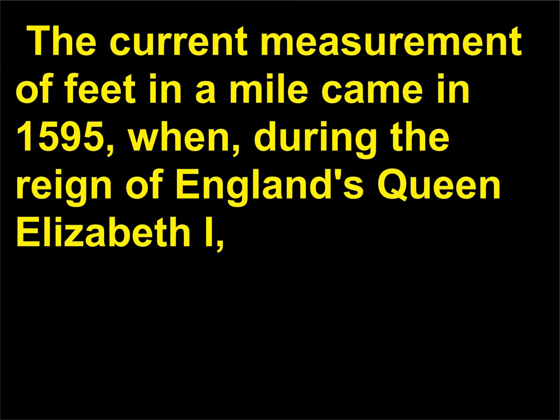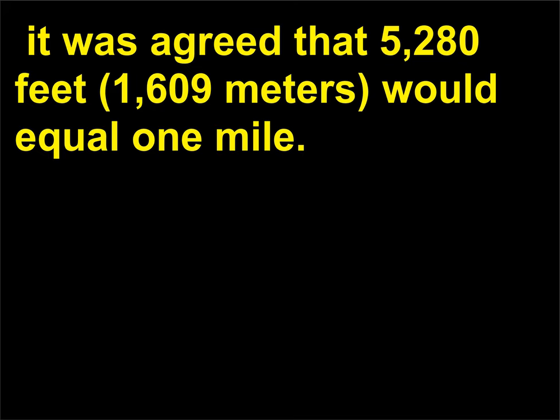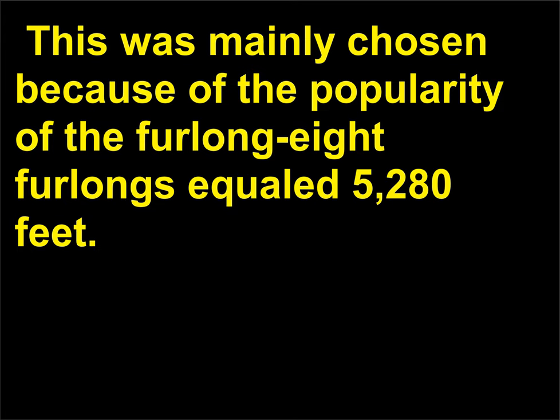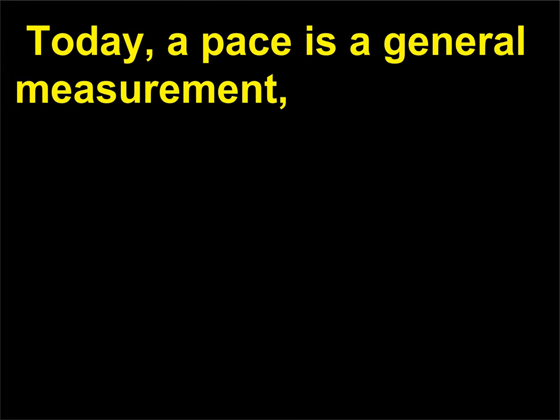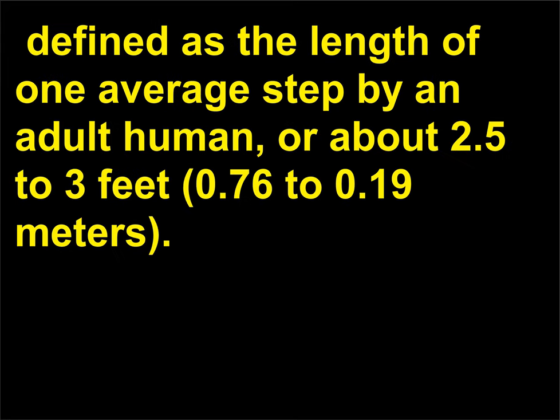The current measurement of feet in a mile came in 1595, during the reign of England's Queen Elizabeth I, when it was agreed that 5,280 feet, or 1,609 meters, would equal one mile. This was mainly chosen because of the popularity of the furlong — 8 furlongs equaled 5,280 feet. Finally, the pace was once attached to the Roman mile. Today, a pace is a general measurement defined as the length of one average step by an adult human, or about 2.5 to 3 feet.